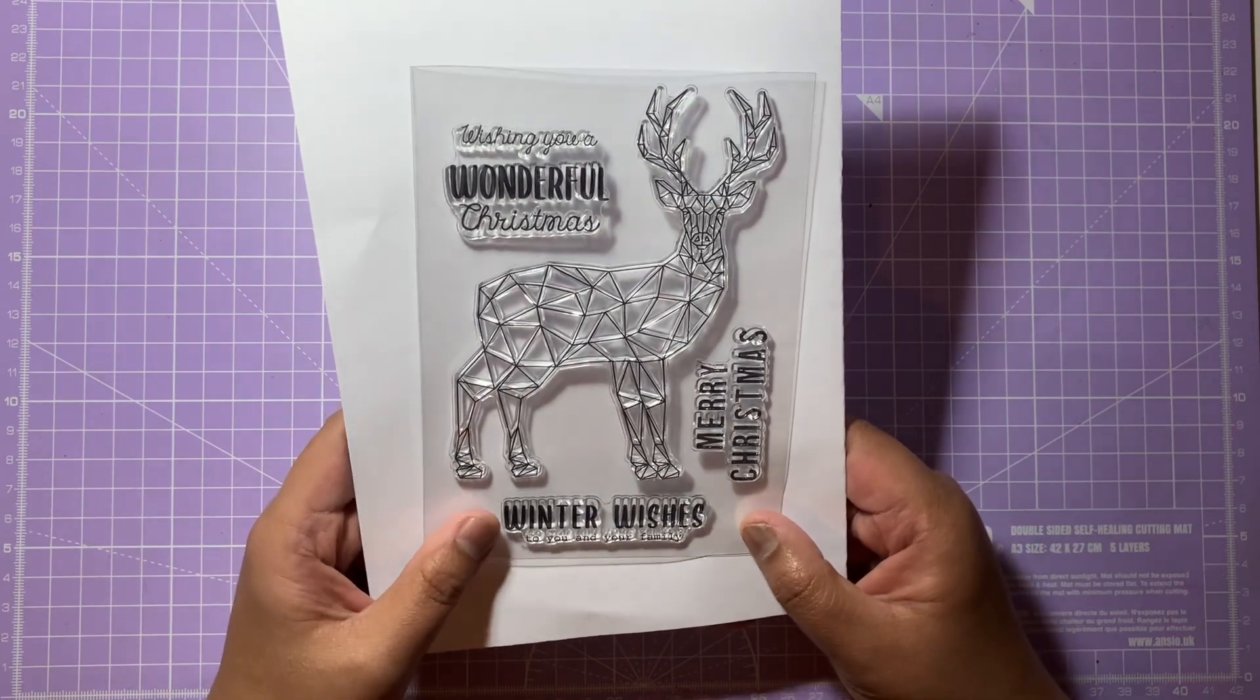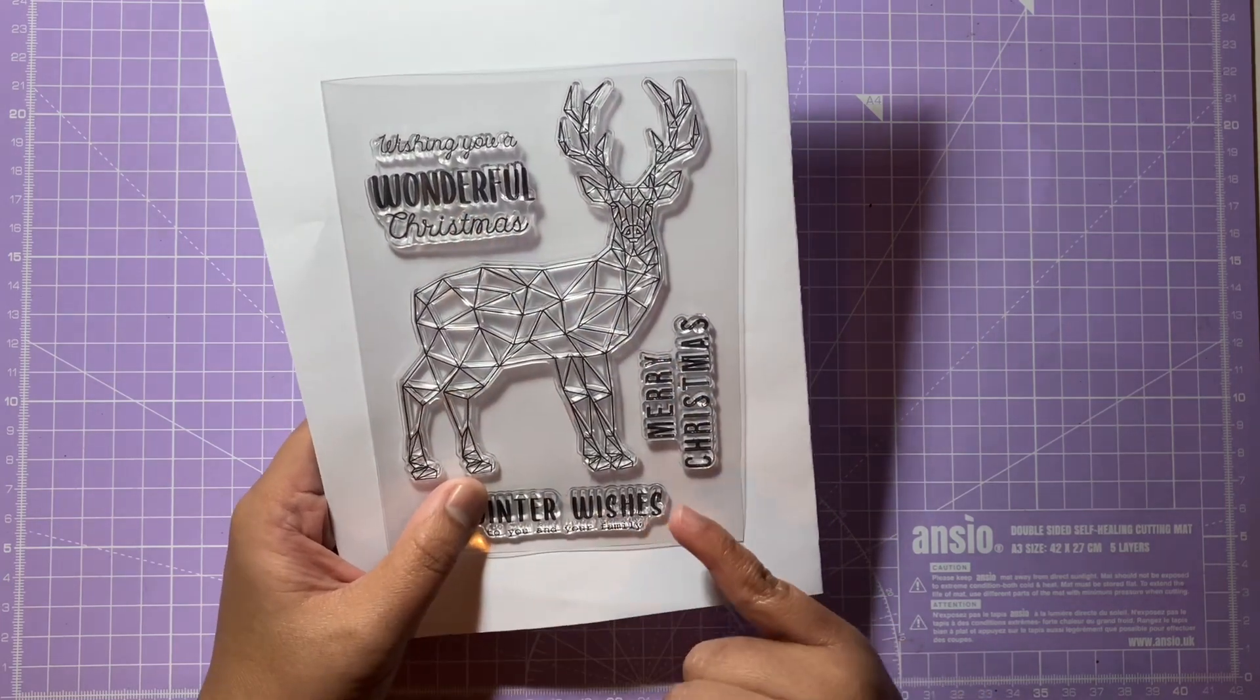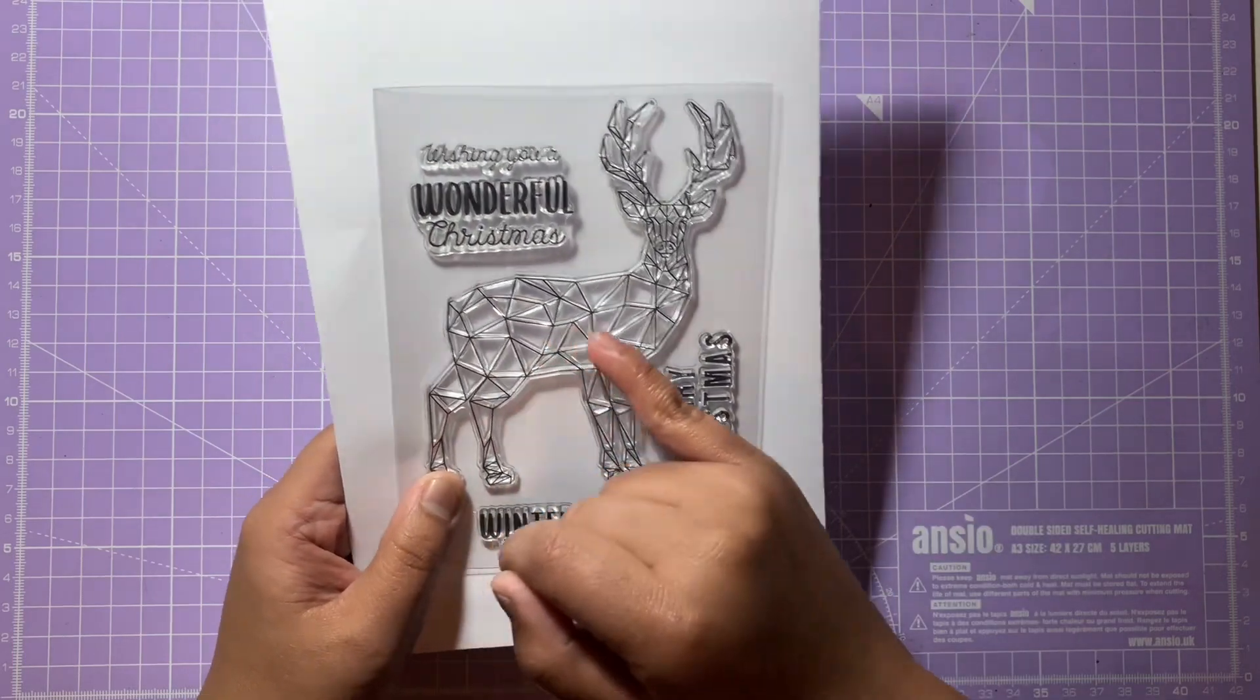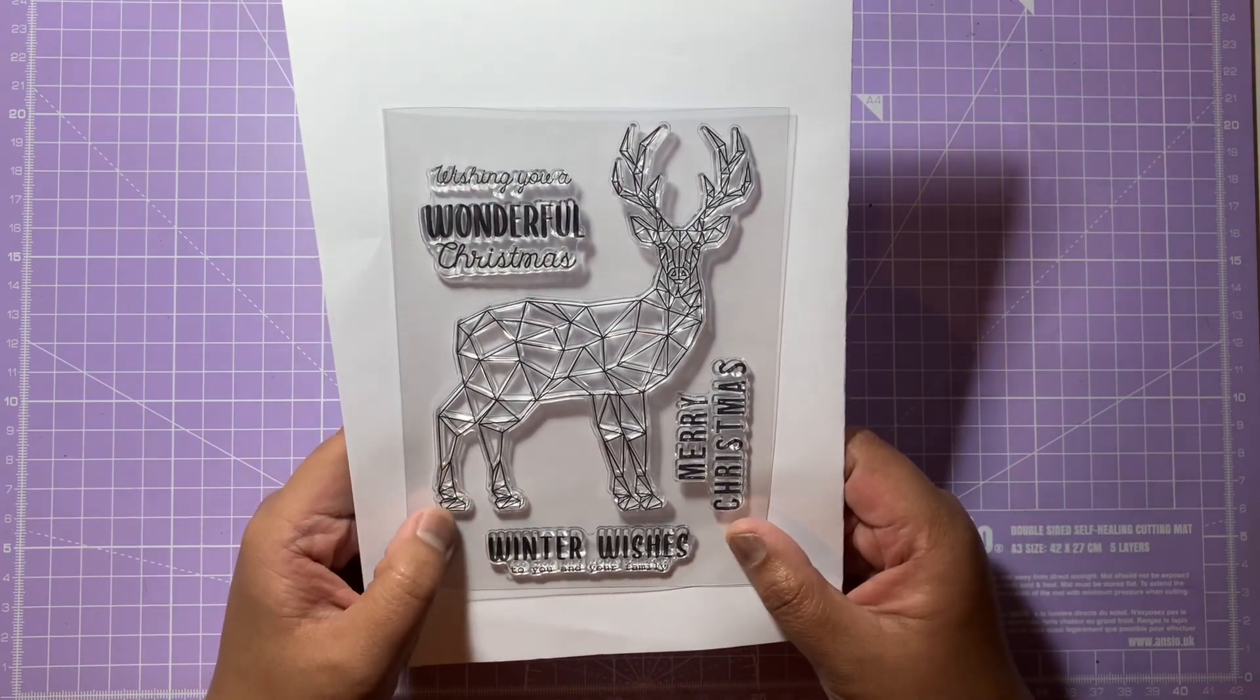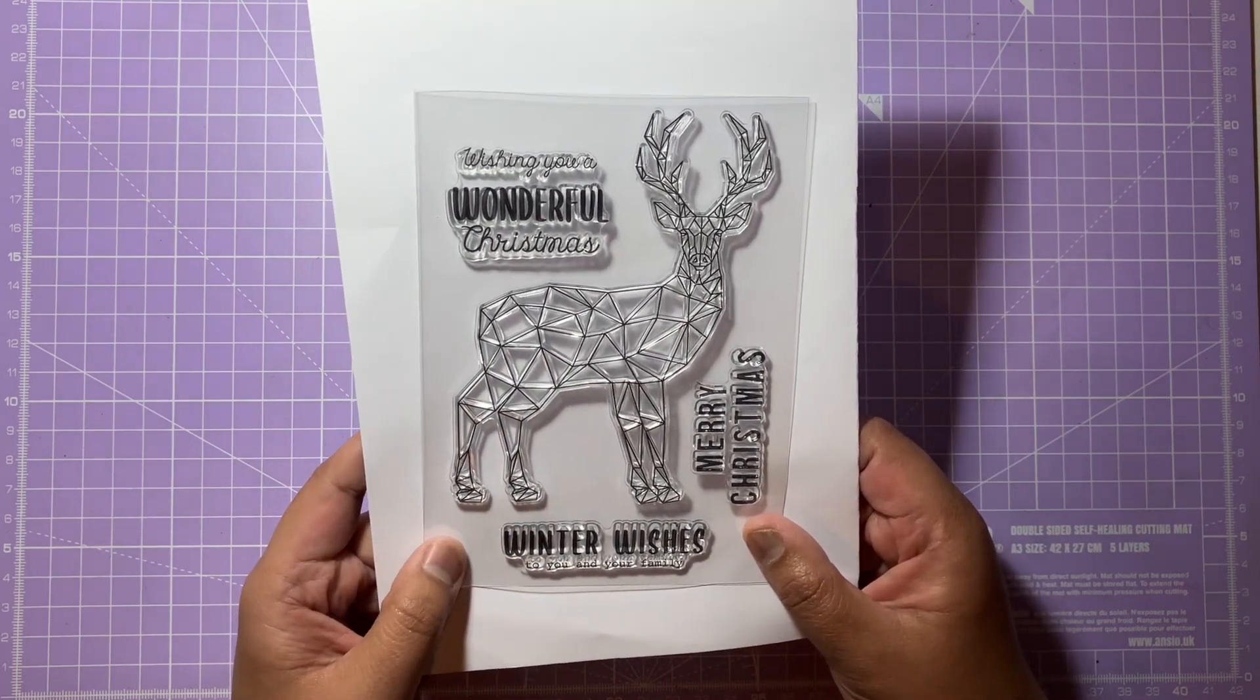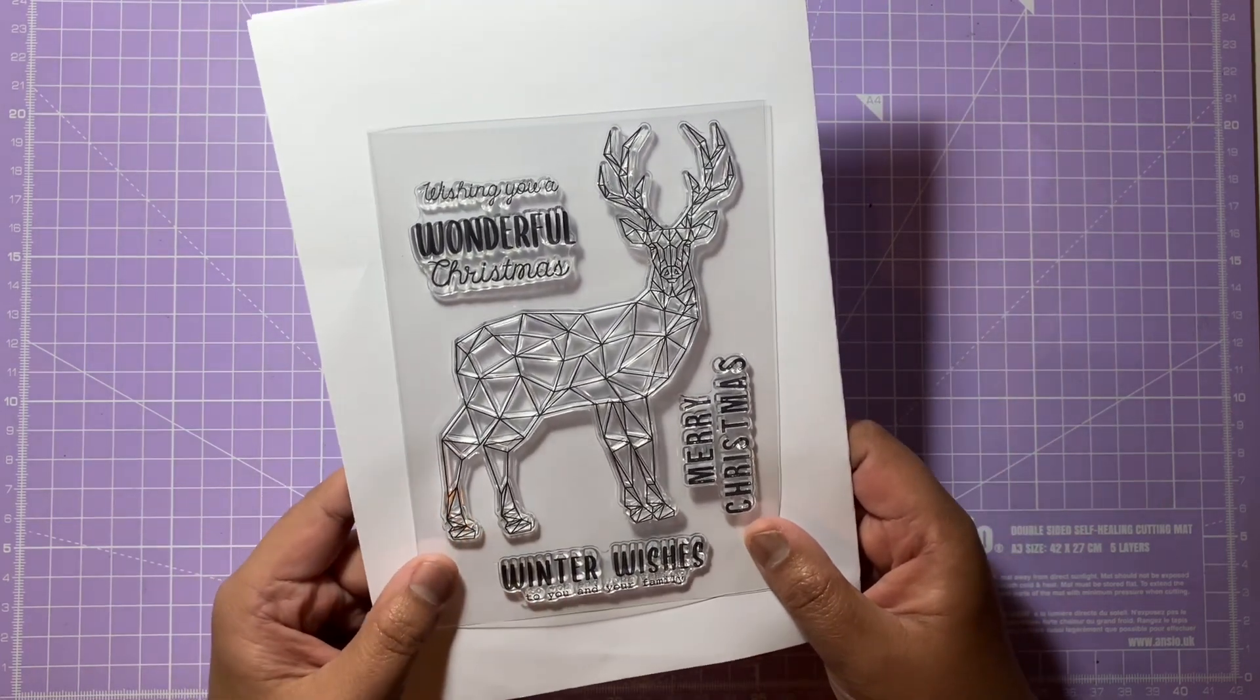We have this gorgeous geometric reindeer here, we have some sentiments - it says wishing you a wonderful Christmas, merry Christmas, and winter wishes as well. I love the lines in the geometry used for the deer. This would be really good for heat embossing - if you use gold or silver this would really stand out on the card, especially against a darker background. So this is really beautiful. That is the stamp set for day one using Lou Collins's Textures.